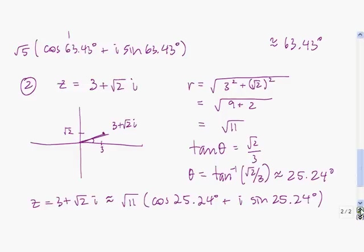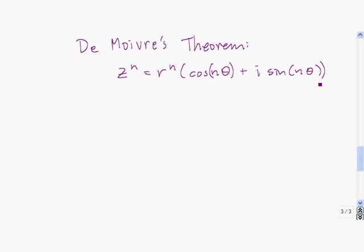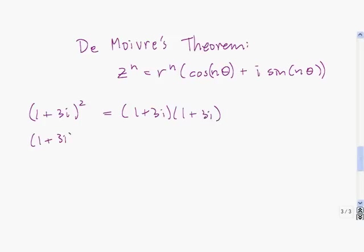At this point you're probably wondering what the point of having a trigonometric form is. One reason is De Moivre's theorem, which says that the nth power of Z equals R to the n times the quantity cosine of n theta plus i times sine of n theta. This is very useful because squaring or cubing 1 plus 3i by repeated multiplication is cumbersome — De Moivre's theorem simplifies that dramatically.